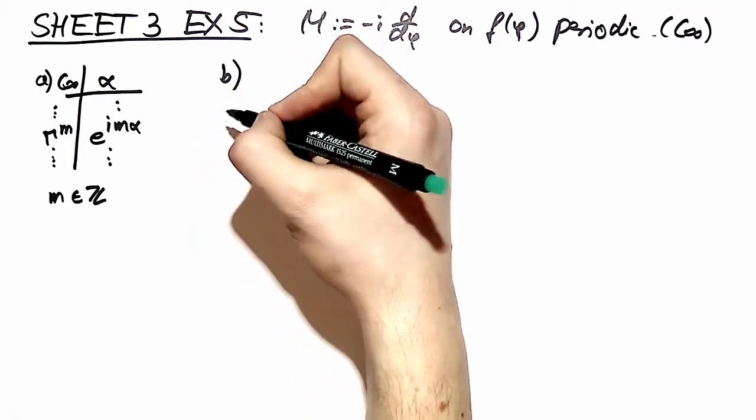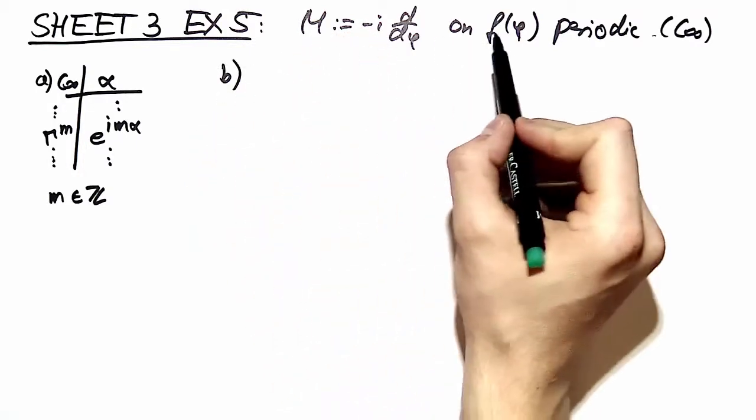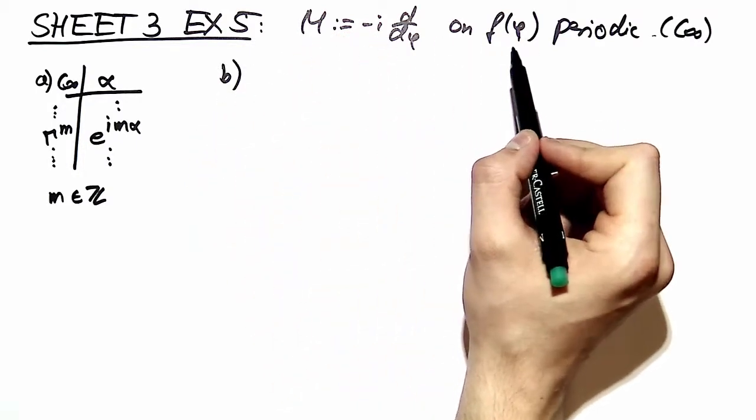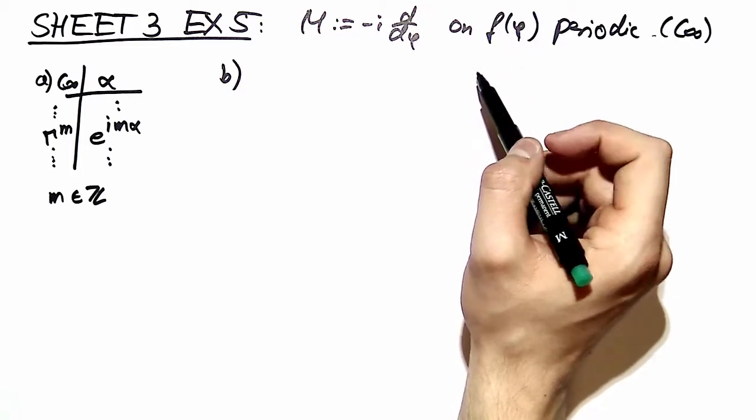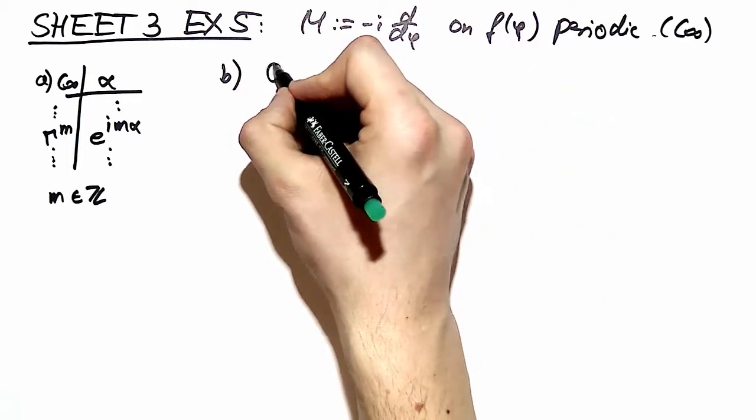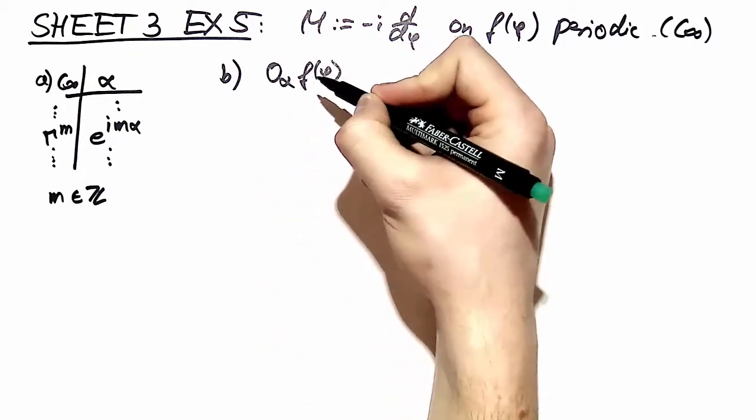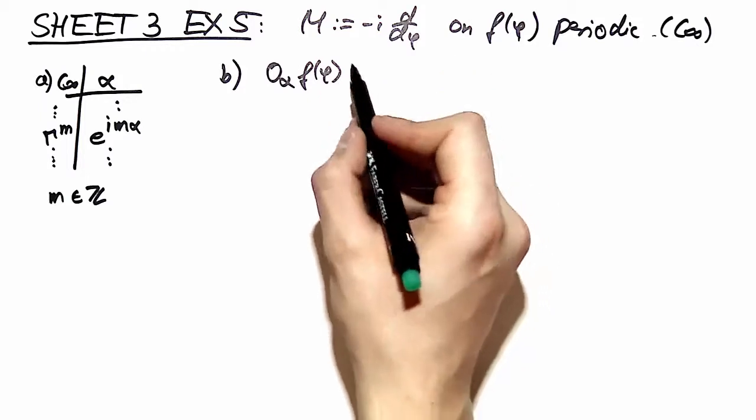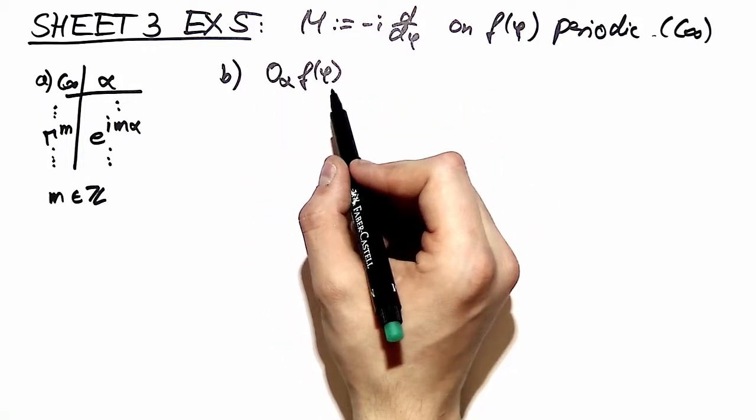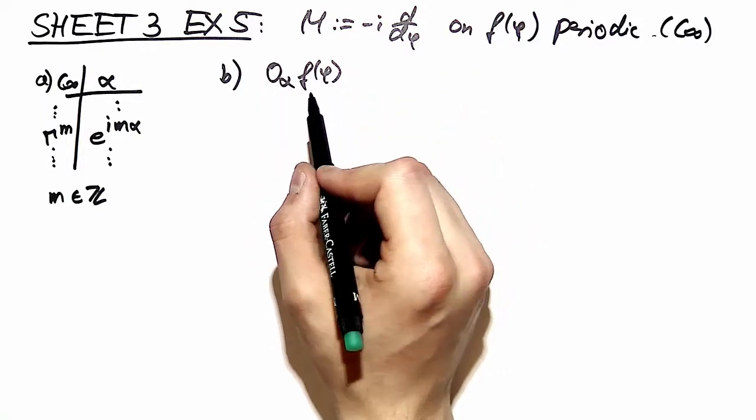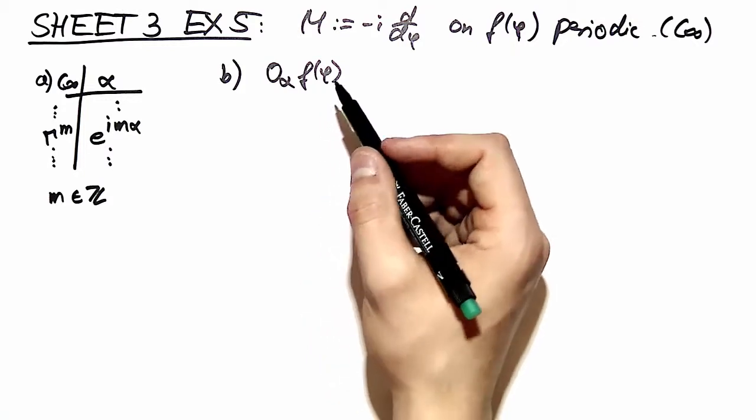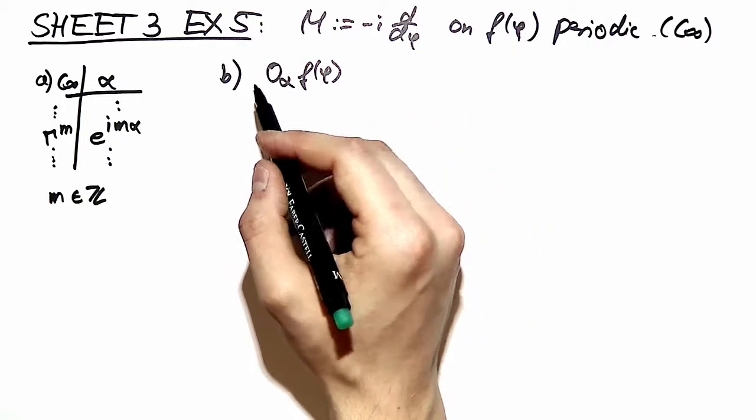In part b we want to define how operators acting on this function space transform the different functions. So we want to define a rotation operator o alpha acting on a function f of phi. You might recognize this expression from exercise number 2. In exercise number 2 we define it on e3. Here we want to transfer that to polar coordinates.